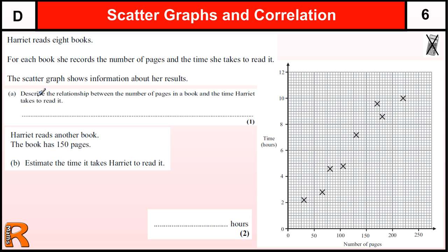So the question is, describe the relationship between the number of pages in the book and the time Harriet takes to read it. So we can either do this by talking about what's technically called correlation, which is how closely the data points match a straight line.